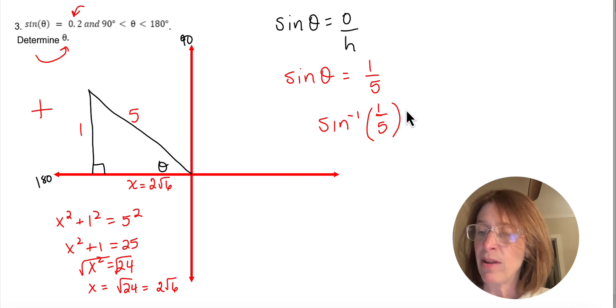So I'm going to do second, inverse sine 0.2, and I'm going to get 11.53.